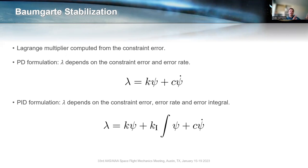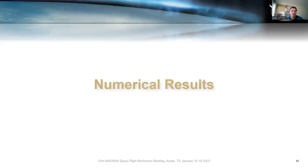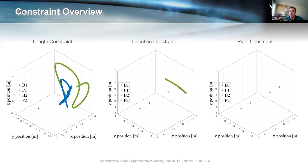There are a lot of mathematical derivations in the paper — we go through each of the constraints and define how we implement them. I'm going to skip that and let you read the paper if it interests you, and instead jump into the actual numerical results, starting with a constraint overview.